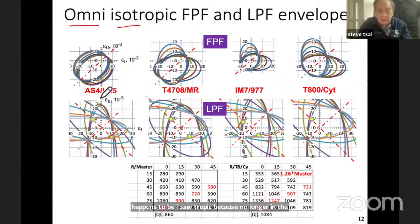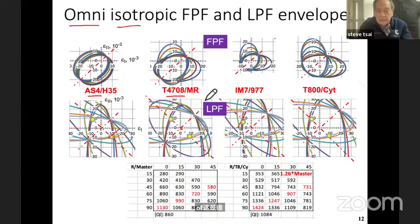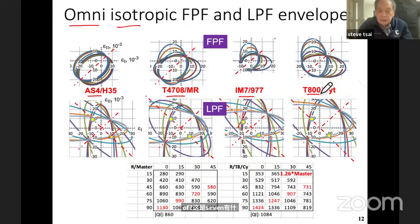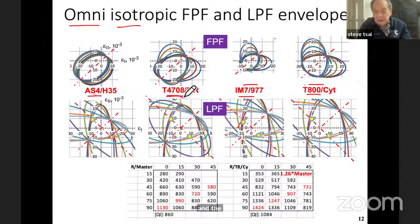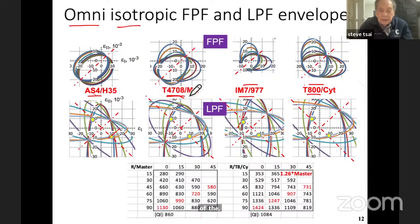We have examples of AS4, T4708, IM7/977, and T800 Cytec materials — four representative materials. IM7 and T800 represent the high end, whereas AS4 represents the low end. T4708 turns out to be the average of the high and the low, so we later call it the master because it represents the average of all the envelopes.